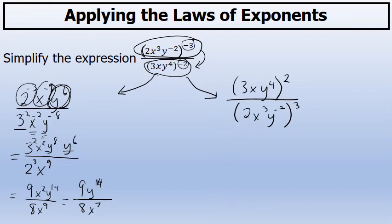So the simplified version of the original problem is nine y to the fourteenth over eight x to the seventh. You should get that same answer when I do it with the second method that I described.